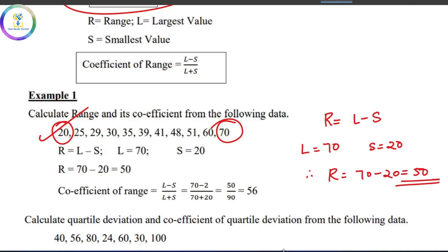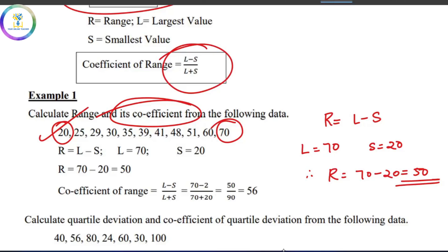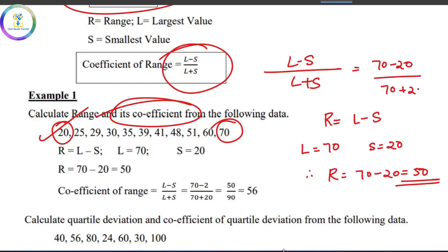We are talking about the coefficient of range now. The coefficient of range formula is L minus S divided by L plus S. That is 70 minus 20 divided by 70 plus 20, which is 50 divided by 90. That is the coefficient of range. Simple — 2 or 3 marks.